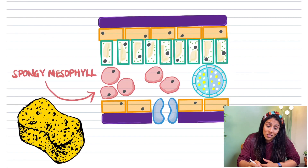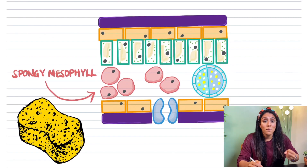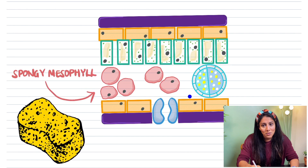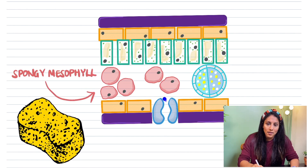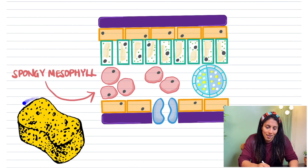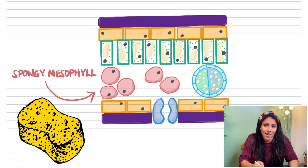The fourth layer contains round-looking cells — these are your spongy mesophyll cells. They're really clever because they arrange themselves to create spaces between them, so gases from outside can come in from underneath the leaf and travel easily to the palisade mesophyll cells. To help you remember the name, think of a little sponge to represent the spongy mesophyll.